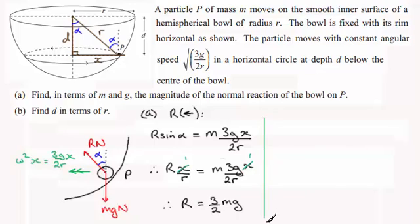Now for the next part, part b, we've got to find d in terms of r. To do this, we need to resolve vertically. I'll take upwards as positive. So we've got the component of r upwards is r cos alpha, minus the weight mg must equal 0.